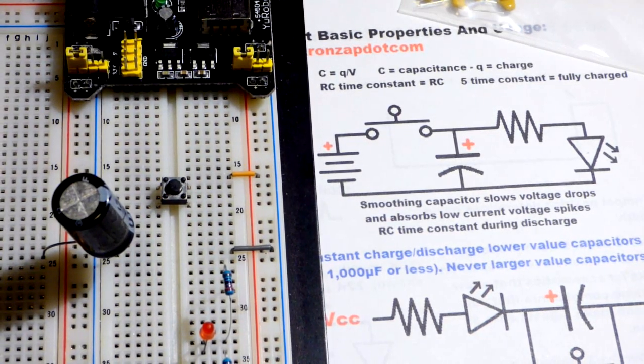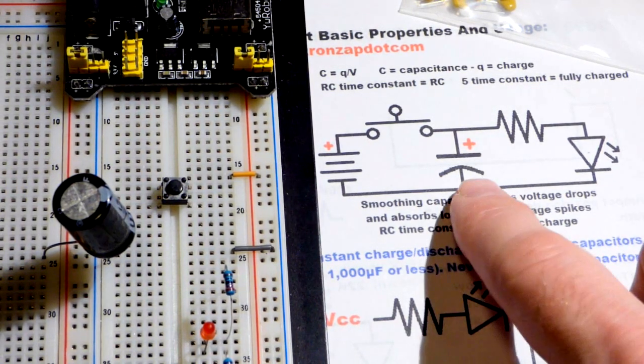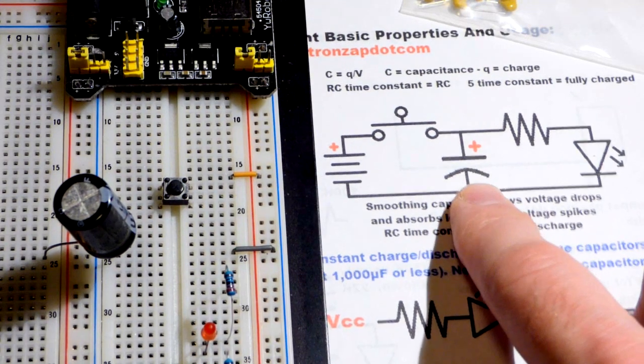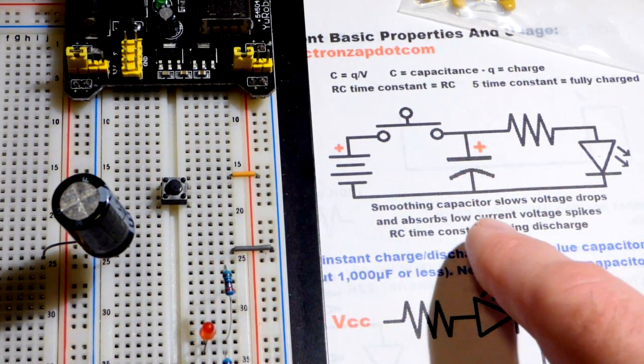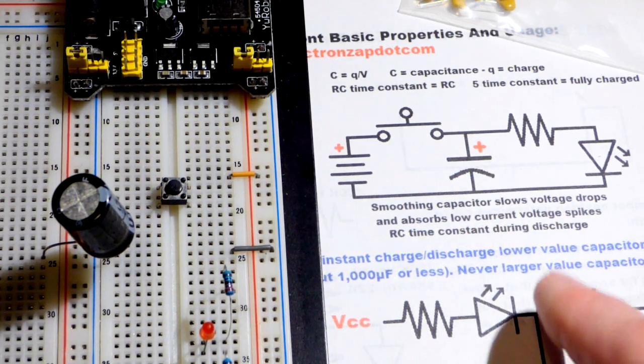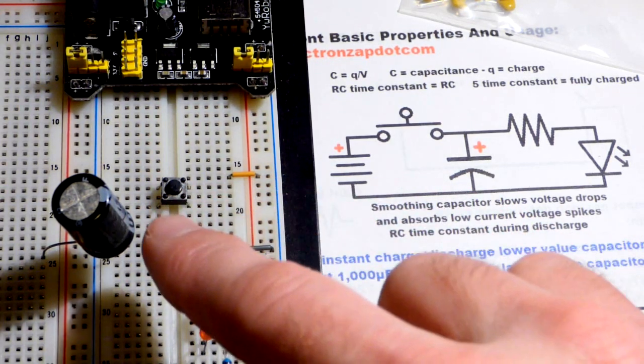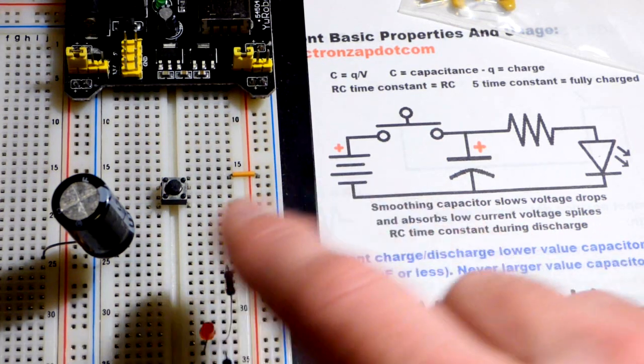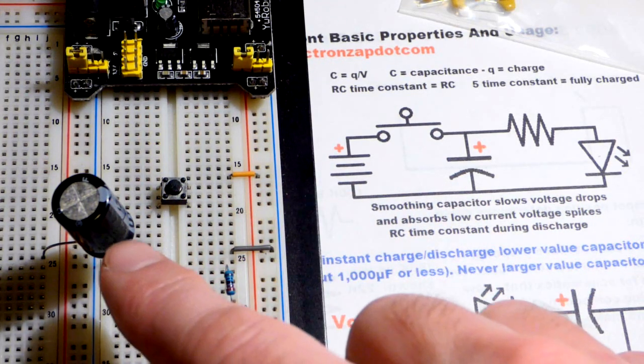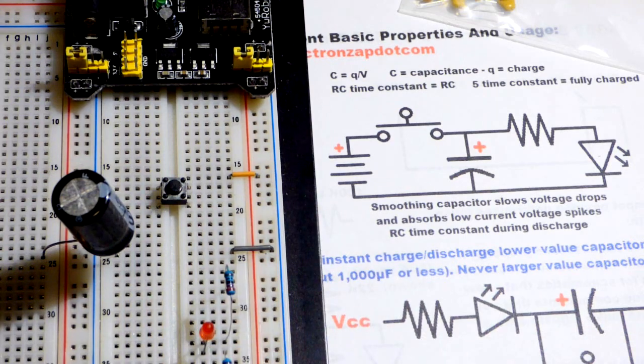In this video we're going to look at using the capacitor as a smoothing capacitor. This is part of a diagram I used in a single video that was half an hour long, so I'm going to break apart some parts of this video for shorter videos.